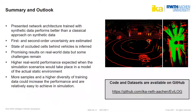To sum up, we have shown that our methodology — using synthetic data only to train a deep neural network — performs better than a classical geometric approach even when presented with synthetic data. First- and second-order uncertainty of cell states are estimated, and the state of occluded cells behind vehicles is inferred. There are still some challenges in improving generalization to real-world data, but results are already quite promising. We expect better performance if simulated scenarios were placed in a model of the actual static environment of the real-world test data, and higher diversity of training data could further improve performance — which is relatively easy to achieve with simulation data. If you would like to contribute to our approach, have a look at our GitHub page where you will find all data and code necessary to reproduce the results presented.